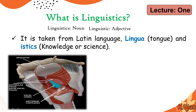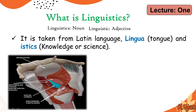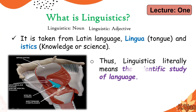Linguistics is a scientific study of language because we scientifically study sounds — where these sounds have been produced and what the organs of speech involved in producing sounds are. Thus, linguistics literally means the scientific study of language. This is a simple, to-the-point definition most often asked by students: linguistics is the scientific study of language.